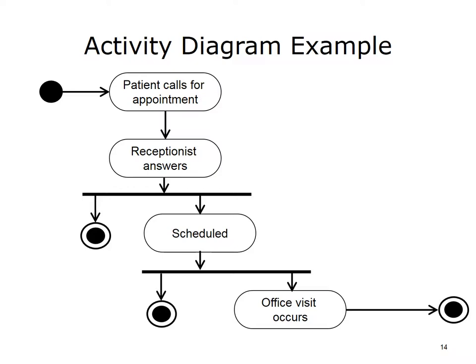In this simplified activity diagram example, the process starts when a patient calls to schedule an office visit. The receptionist answers and attempts to schedule the appointment. If a mutually convenient time is found, the appointment is scheduled. If not, the process ends. When the schedule date arrives, the patient attends the visit, or not. The process is complete when the office visit is over.